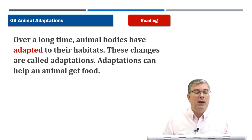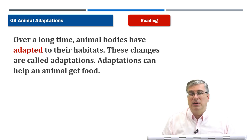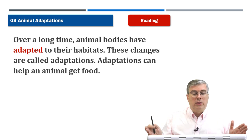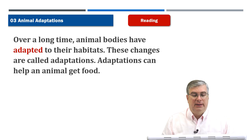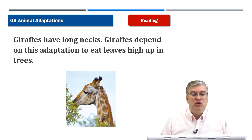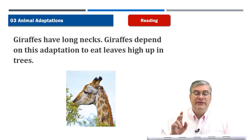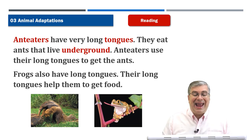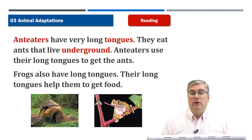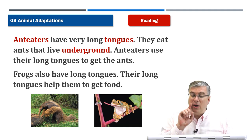Let's do the reading. I will read out loud — read along with me, practice pronunciation, or read along silently. Focus on the vocabulary words. Let's begin. 'Over a long time, animal bodies have adapted to their habitats. These changes are called adaptations. Adaptations can help an animal get food. Giraffes have long necks — they depend on this adaptation to eat leaves high up in trees. Anteaters have very long tongues. They eat ants that live underground. Frogs also have long tongues — their long tongues help them to get food.'